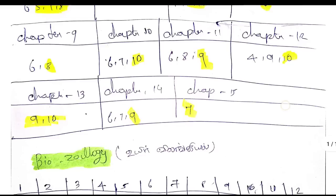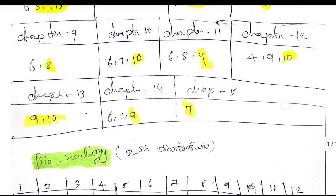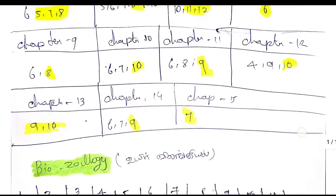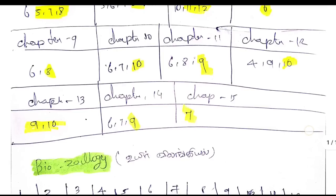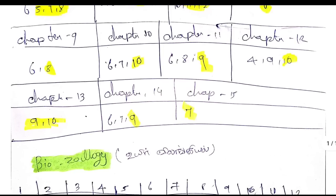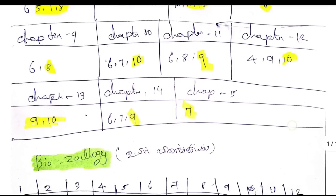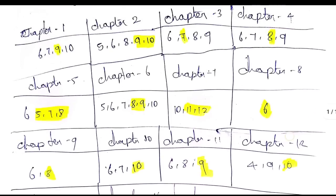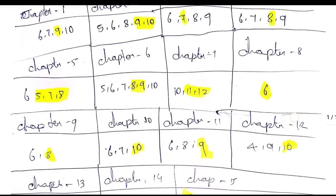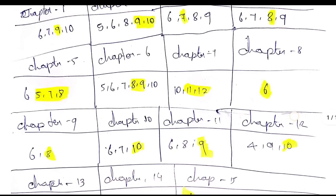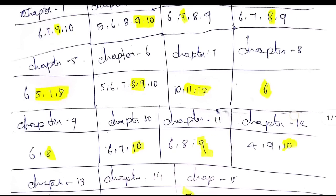Chapter 13: question numbers 9, 10, and 12 are 5-mark questions. Chapter 14: question numbers 6, 7, and 9 — the 9th question is a 5-mark question. Chapter 15: the 7th question is a 5-mark question. Overall, across all 15 units there are important questions listed.